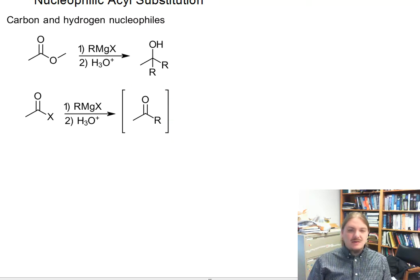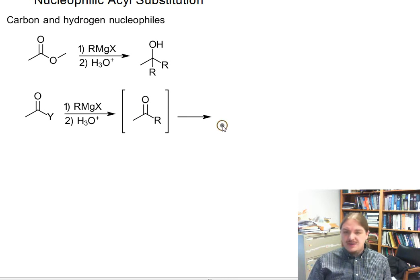I'm going to put the ketone in brackets because depending on whatever X is, let's choose a different letter. Let's use Y. Depending on whatever Y is, you could get a ketone. In the case of the Grignard reagent, you're going to get the ketone and then you can get the tertiary alcohol.